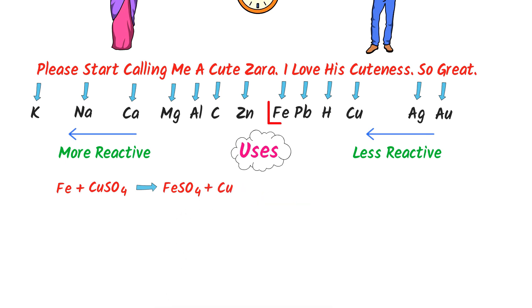Here, we can see that iron is above in the reactivity series than copper. So iron is more reactive than copper. That's why iron is displacing the copper from the copper sulfate. So this is the displacement reaction where we use the metal reactivity series.